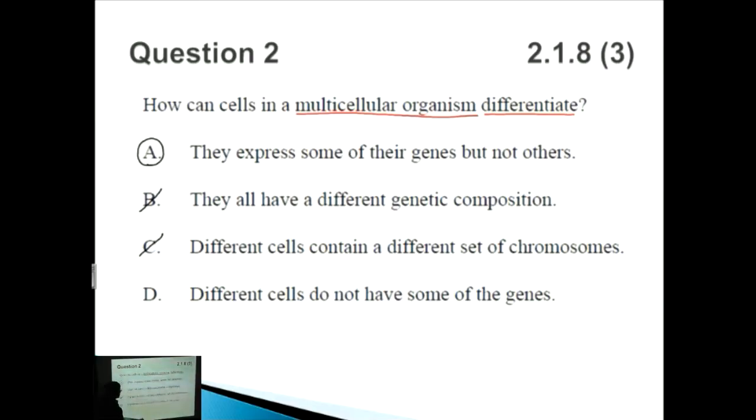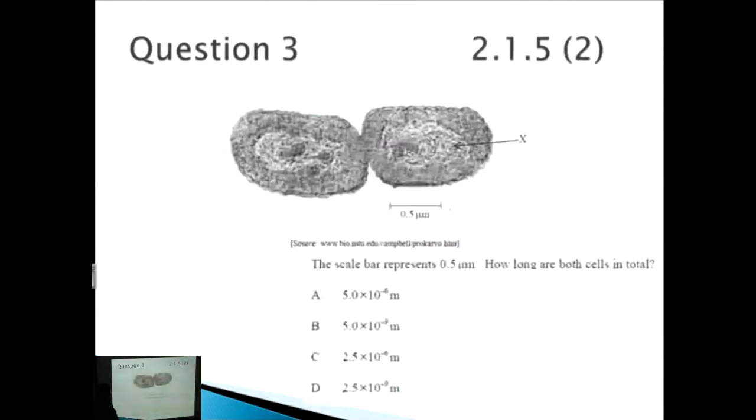You can get cells from the same person, whether that be a hair cell or brain cell, and they would have exactly the same genetic makeup. Different cells contain a different set of chromosomes - this is exactly the same as B, talking about different genetic composition. D: Different cells do not have some of the genes - once again similar to B. In essence, B, C, and D are all saying exactly the same thing, which is why they're wrong.